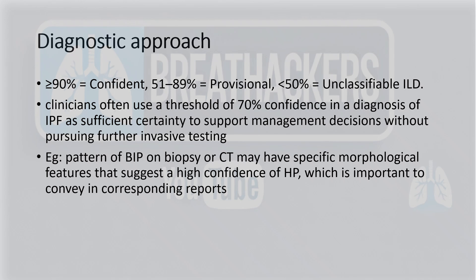Coming to the diagnostic approach — it was already present in the previous classification. More than 90% confidence indicates a confident diagnosis. 51 to 89% indicates a provisional diagnosis, requiring more tests to reach a final conclusion. Less than 50% stays unclassifiable ILD. Clinicians often use a threshold of 70% to proceed with treatment decisions without biopsy — for example, a CT showing a clear UIP pattern means you can proceed with treatment without needing a biopsy. This structured confidence scale has now been made valid for both radiology and histology.